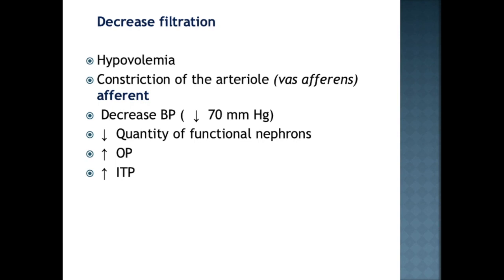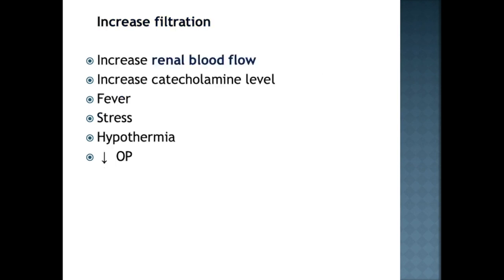Systemic regulation involves sympathetic stimulation, which increases both afferent and efferent resistance; intense sympathetic stimulation leads to drastic reduction in both renal blood flow and GFR, and also increases renin release via beta-1 adrenoceptors. Activation of the renin-angiotensin-aldosterone system, atrial natriuretic peptide, and prostaglandins also influence glomerular blood flow. Increased filtration — a less common situation — is caused by increased catecholamine levels, stress, fever, increased renal blood flow, or hypoalbuminemia with decreased oncotic pressure.